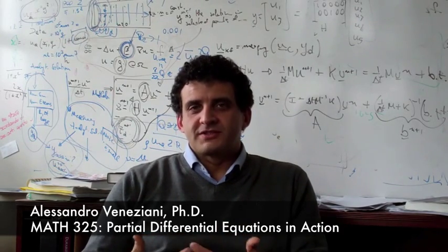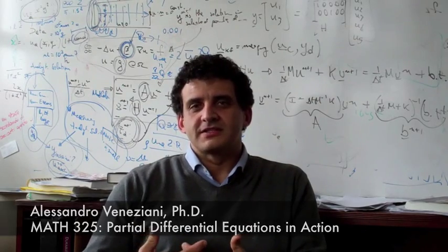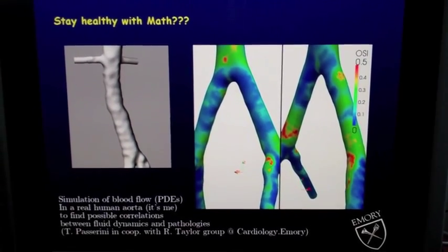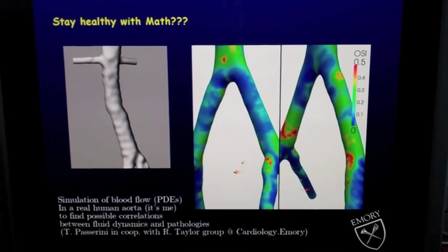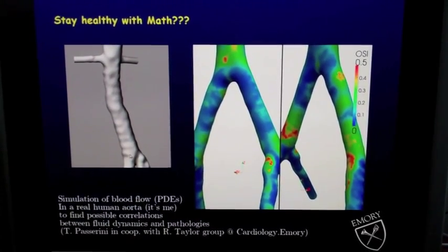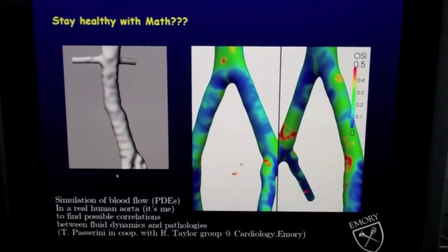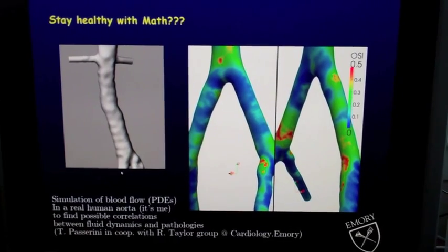It's important to mention that this is a four-credit course for applied mathematics. So these are simulations of the blood flow in an aorta of a patient. Actually, not a patient—that's me. This is my aorta. We have reconstructed my aorta in a computer after MRI scanning.